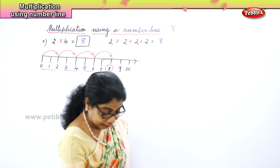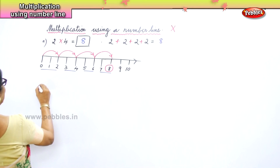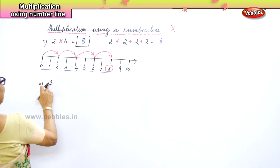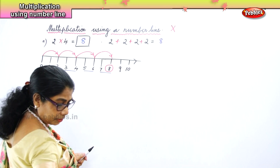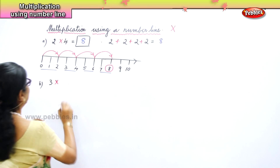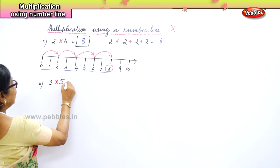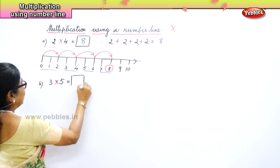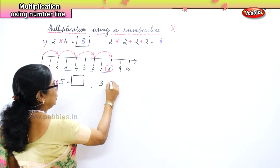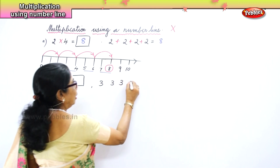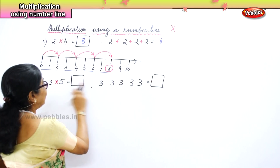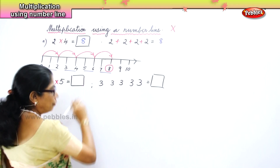Now we will do another sum. Let's take three — we will do three, five times. What is three into five? Three, how many times? One, two, three, four, and five — three five times.